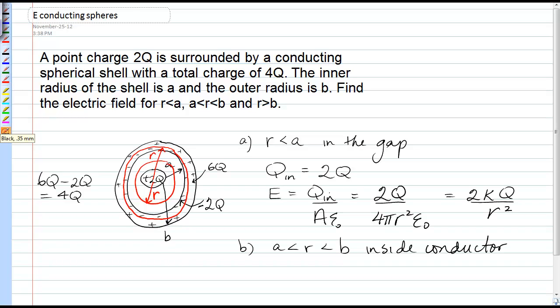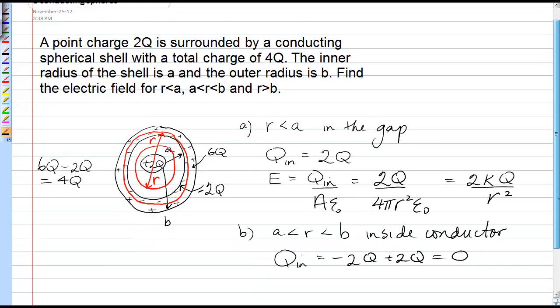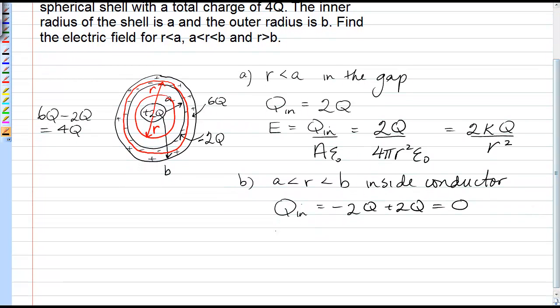Now when I find q_in inside that Gaussian surface, I have negative 2Q on the inside surface of the shell plus 2Q from the point charge, and I actually have zero net charge inside that Gaussian surface. Which is consistent with the result that the electric field inside a charged conductor is zero. Always.